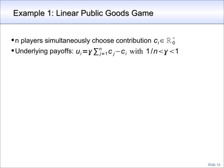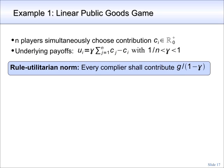The parameter gamma denotes the marginal per capita return of a contribution. Gamma is bigger than 1 over n and smaller than 1. This guarantees that for a selfish player it is individually rational to give nothing, while the sum of utility is maximized if all players give as much as possible.